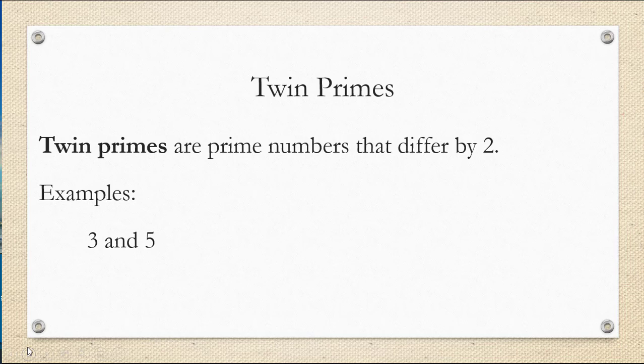Remember, a prime number is a number divisible only by itself and one. Three and five are both prime numbers, and they differ only by two. So this pair is considered a pair of twin primes. Another example would be 11 and 13.